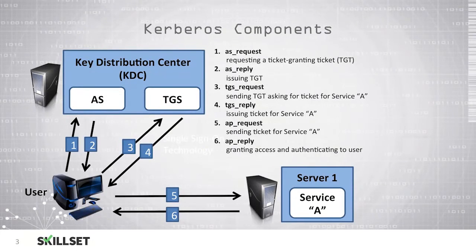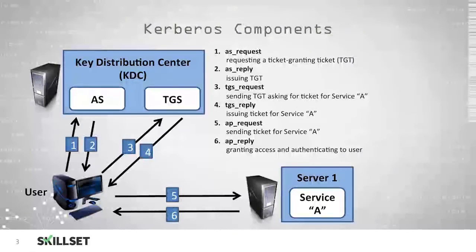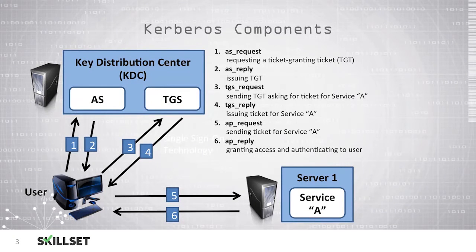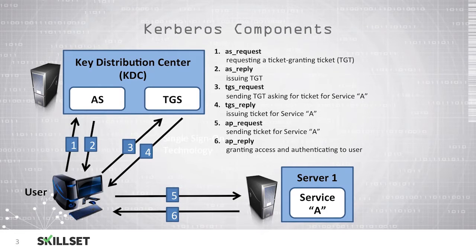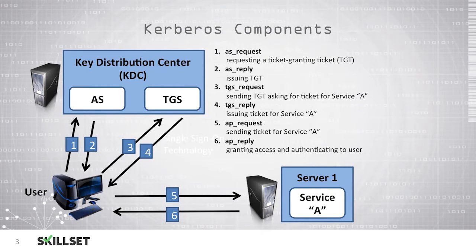The authentication server replies issuing a Ticket Granting Ticket. Next, a Ticket Granting Server request is sent with the Ticket Granting Ticket asking for a ticket for Service A. The ticket granting server then replies issuing a ticket for Service A. An application request then occurs where the ticket that was issued is sent to Service A, and an application reply then occurs which ultimately grants access to the user since they have been authenticated.